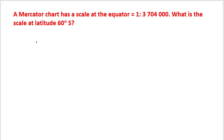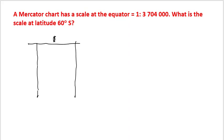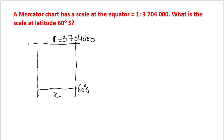Let us understand the question. The question states that on a Mercator projection, if one unit at the equator represents 3,704,000 units on the ground, then at 60 degrees south, how much on the ground will it represent? What is this value of x at 60 degrees south? That is the basic essence.